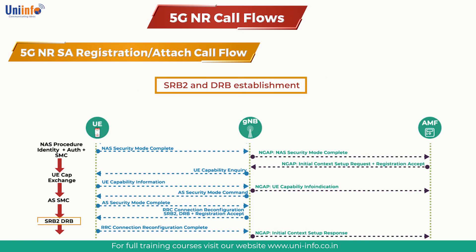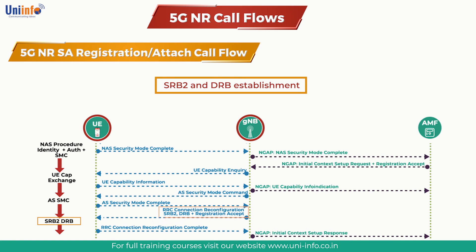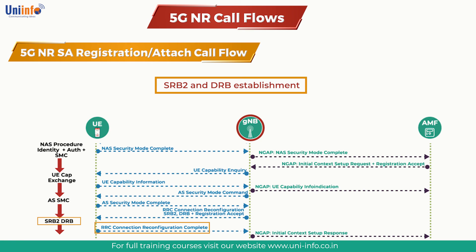Then comes SRB2 and DRB establishment. The gNodeB issues an RRC Reconfiguration message to the UE to establish SRB2 and DRB. After SRB2 and DRB are successfully established, the UE replies to the gNodeB with an RRC Reconfiguration Complete message. The gNodeB signals the successful DRB setup with an Initial Context Setup Response message to the AMF.